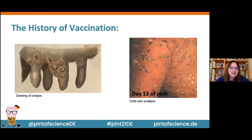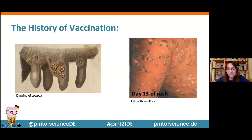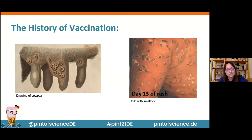A risk of death of one in 180 is not very appealing for vaccinations, so there needed to be a better option. You may have heard of Edward Jenner — he was a British physician. What he observed during his medical work was that cows also had some sort of pox lesions, and these lesions looked somewhat similar to those of children who had smallpox infections. He thought maybe these two were related.